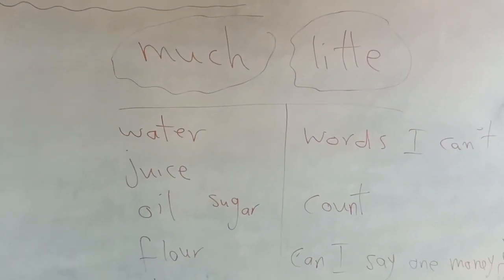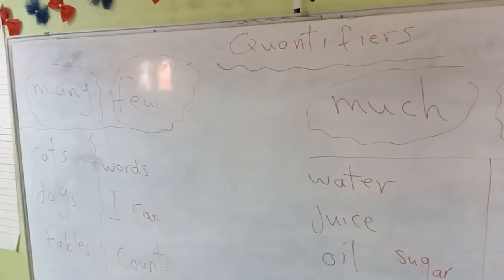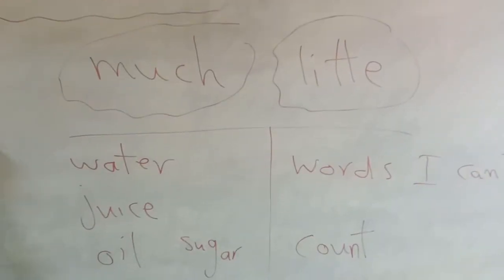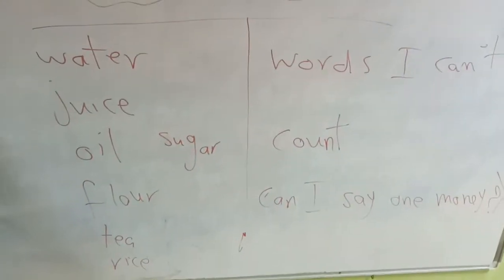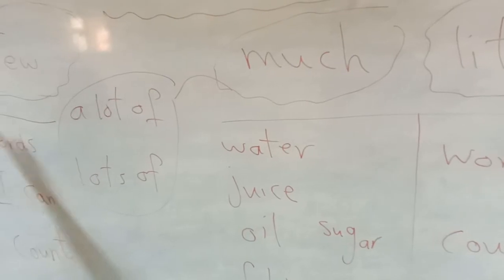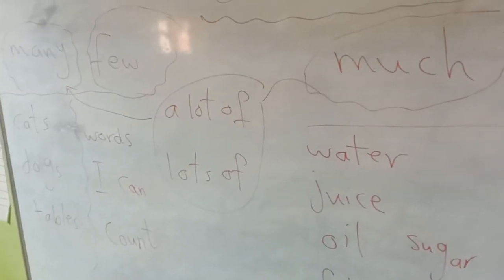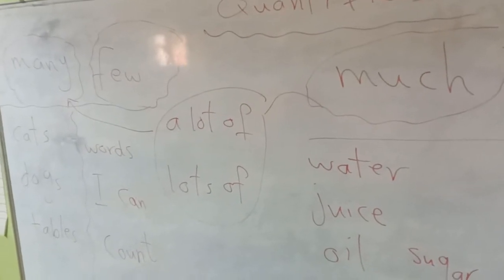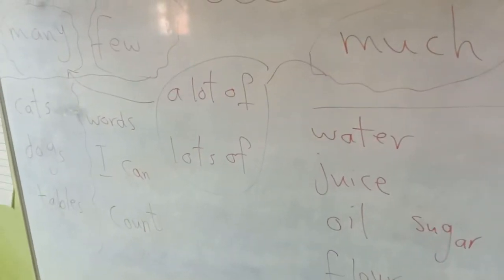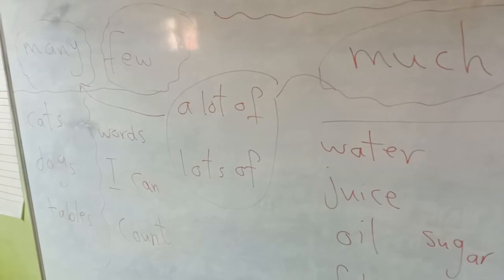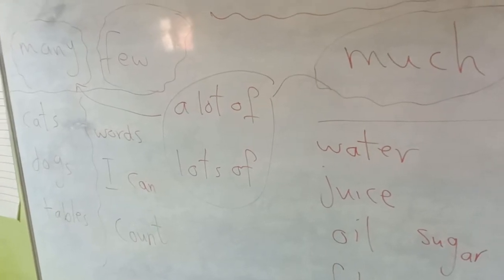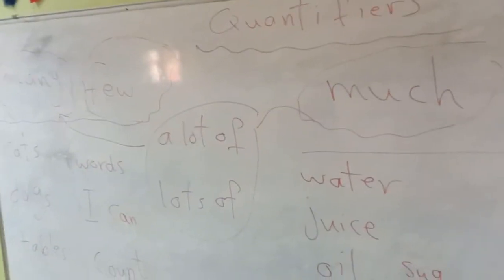I also have some words that equal much and equal many. What are these words? A lot of, and lots of. These equal both much and many. So I can say I need much sugar or I need a lot of sugar or I need lots of sugar. I can also say how many cats do you have? I have many cats, or I have a lot of cats, or I have lots of cats. So a lot of and lots of equal much and equal many.